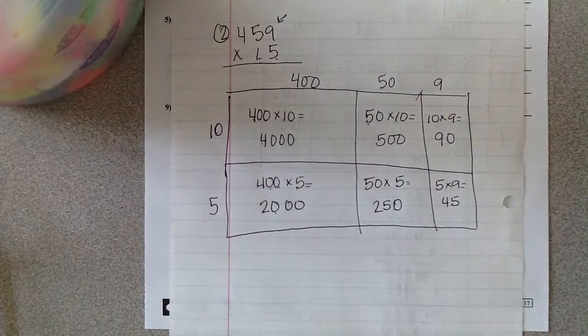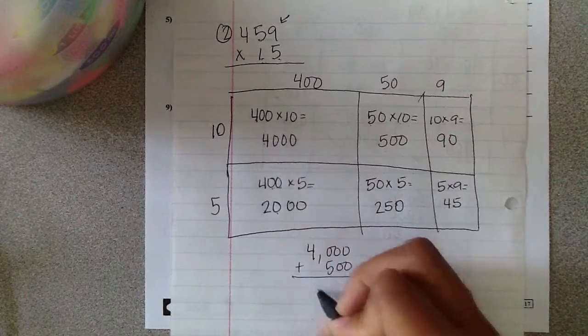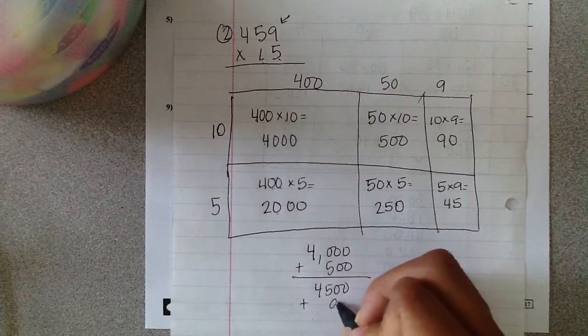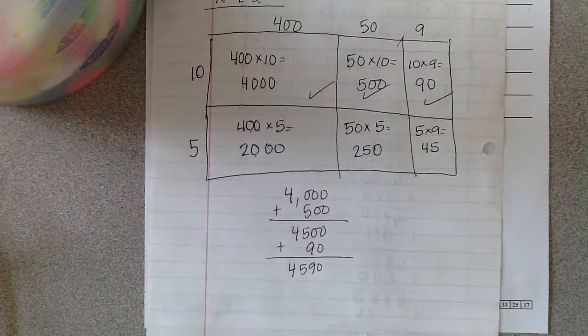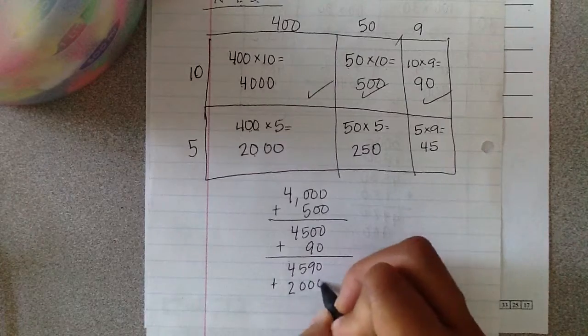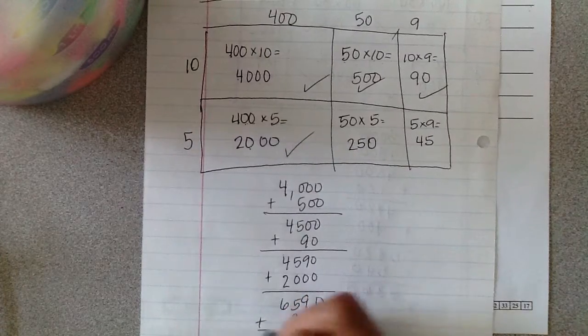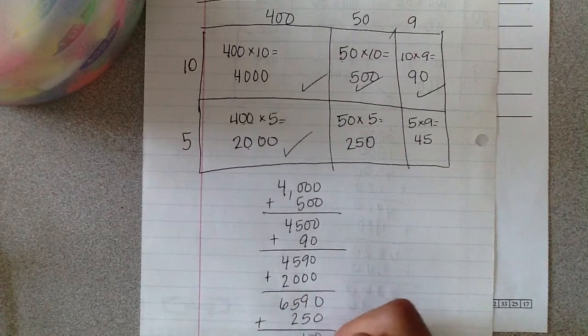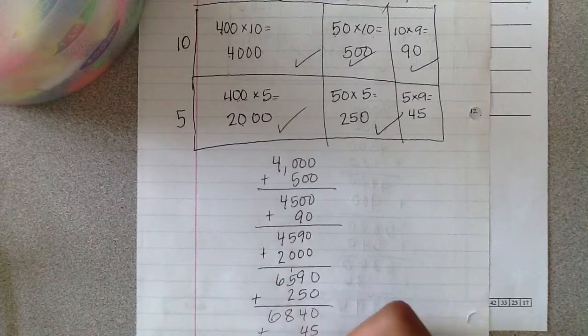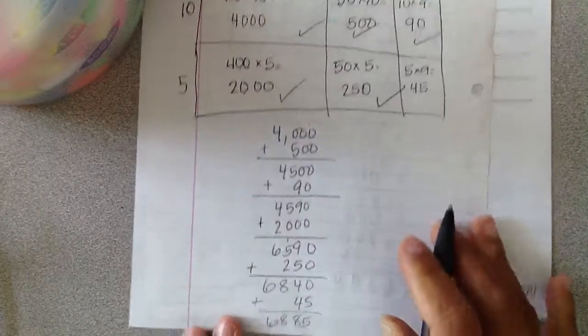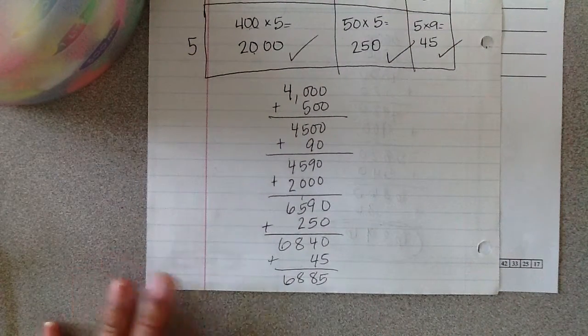These are all my partial products, so I have to add those together. Four thousand plus five hundred equals four thousand five hundred plus ninety equals four thousand five hundred and ninety. Now I need to add two thousand. Add two hundred fifty. Add forty-five. Six thousand eight hundred eighty-five is what you should have gotten as your answer for number two.